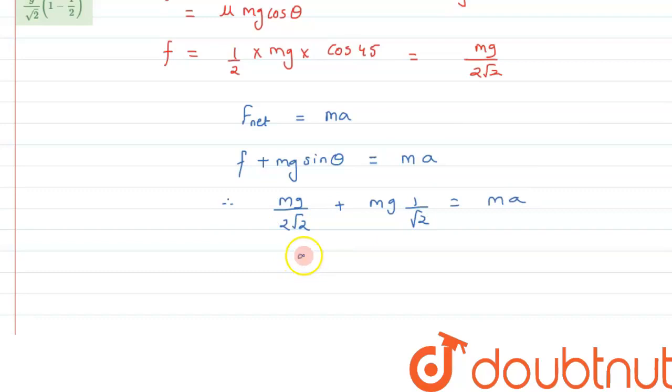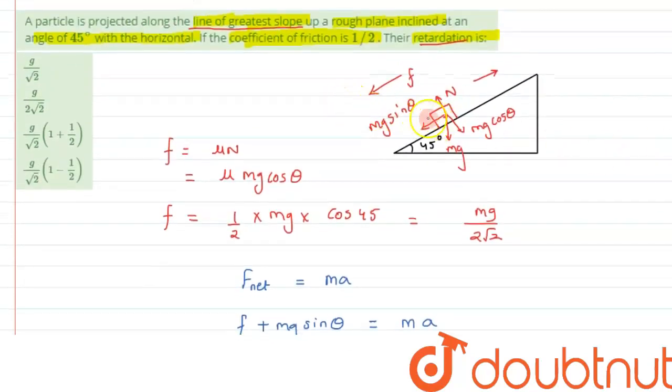So from here we can take the value of g by root 2 as common out. So what we are left with is 1 by 2 plus 1, and that is equal to—this m will get cancelled out from here.